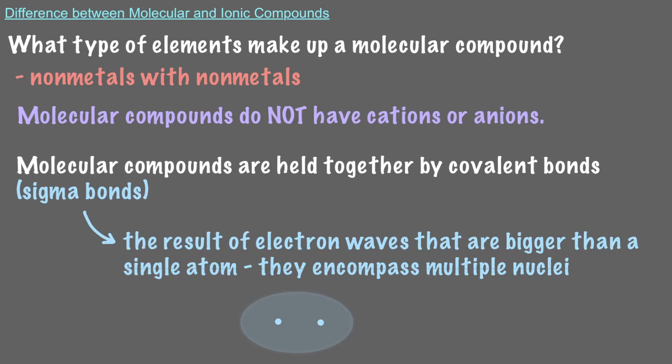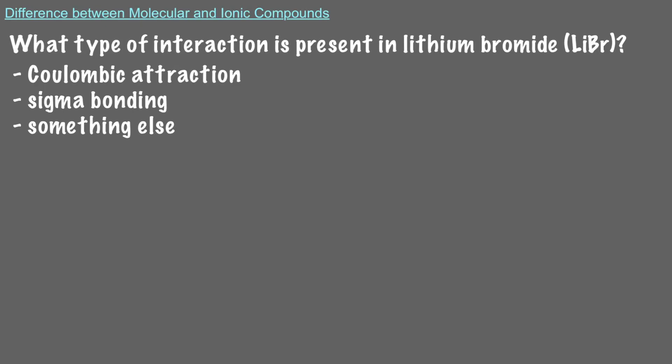Let's look carefully at the atomic level view of these different types of compounds. Let's start with lithium bromide. What type of interaction is present in lithium bromide? Lithium is a metal and bromine is a nonmetal, so lithium bromide is an ionic compound. Therefore, it's held together by coulombic attraction.